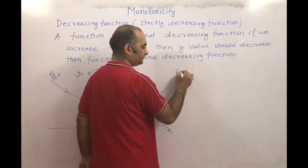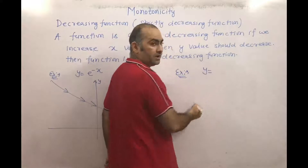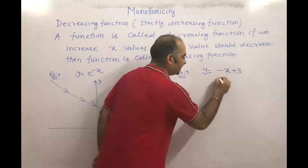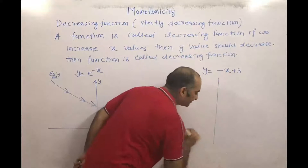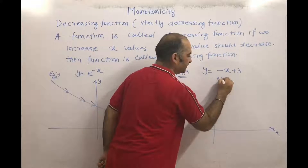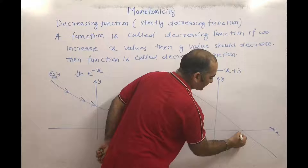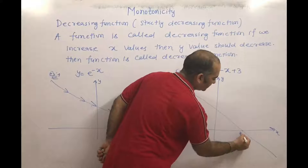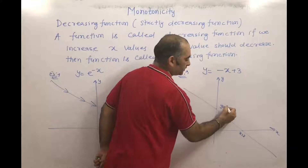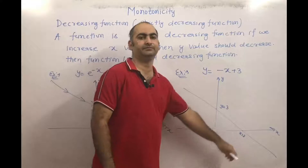The next example is y = -x + 3. The graph of this one — this is the x-axis, this is the y-axis. The graph comes like this, where x = 3 and y = 3 are the intercepts. So this is a strictly decreasing function.